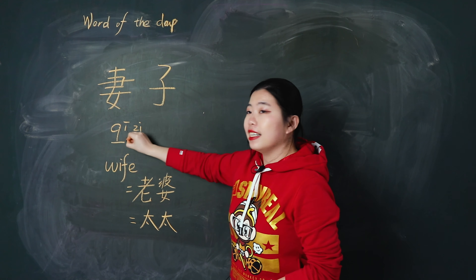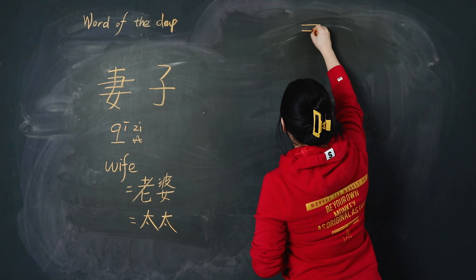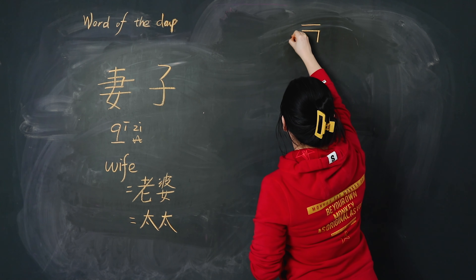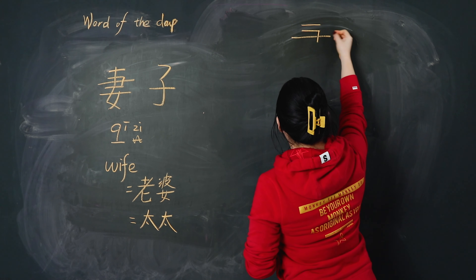First, let's read together. 我们一起读 妻子. Pay attention here, the 子 should be read short and light. 妻子. Very good.